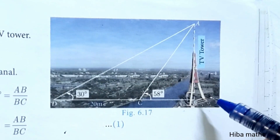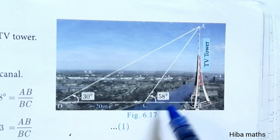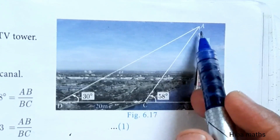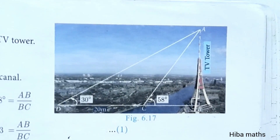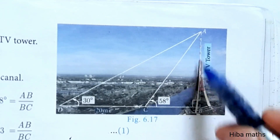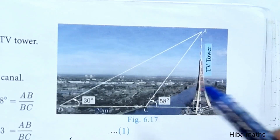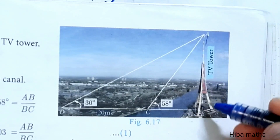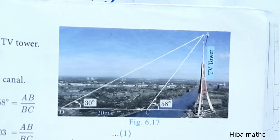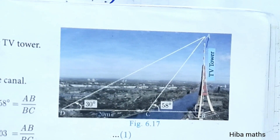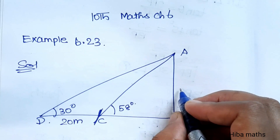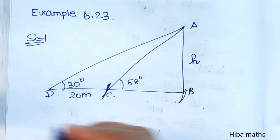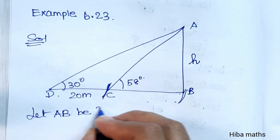We have a diagram on the other side which will make it easy to explain. This is a TV tower. The angle from the near bank point is 58 degrees and the angle from the far point is 30 degrees. Let AB be the TV tower. CB is the width of the canal, and DC is 20 meters away. AB is the height of the tower.